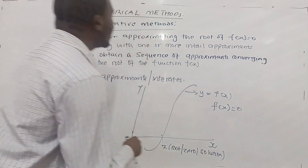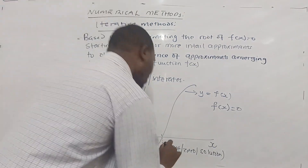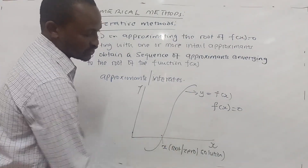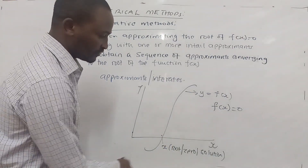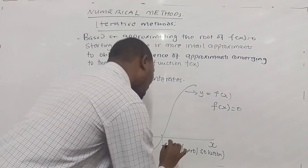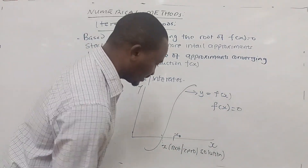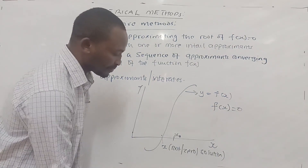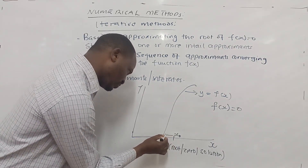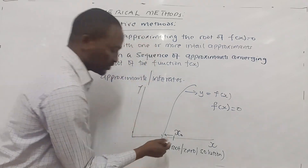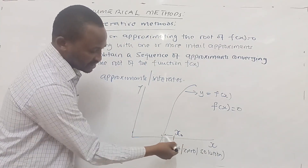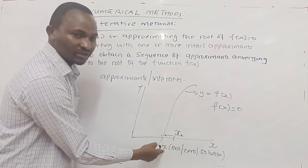In the iterative method, we usually start by guessing — we start with an initial guess, or initial approximate, to the root of f(x) = 0. For example, when we say our x0, as we iterate and get the sequence of approximates, we should be converging to the actual root. The sequence of approximates should be approaching the actual root x.